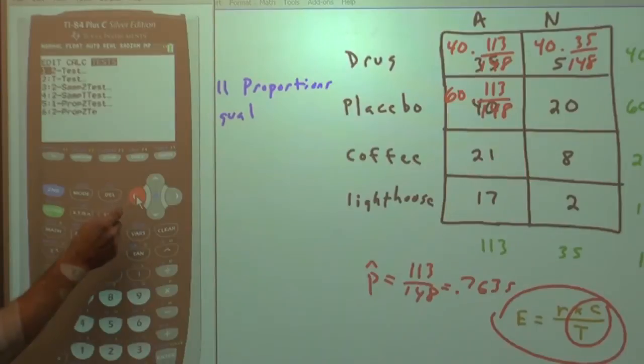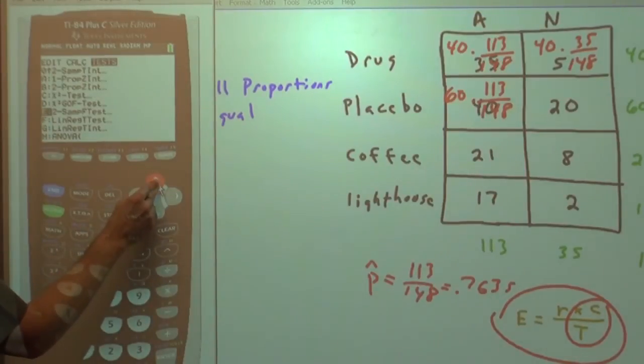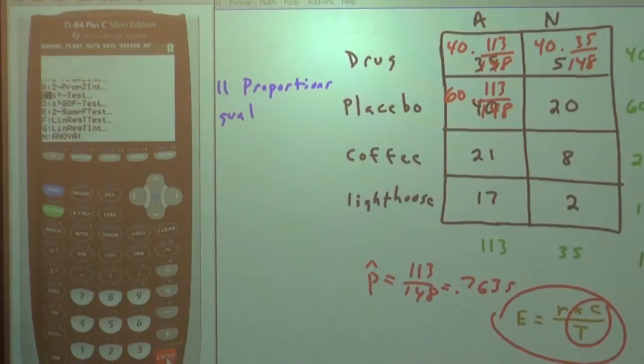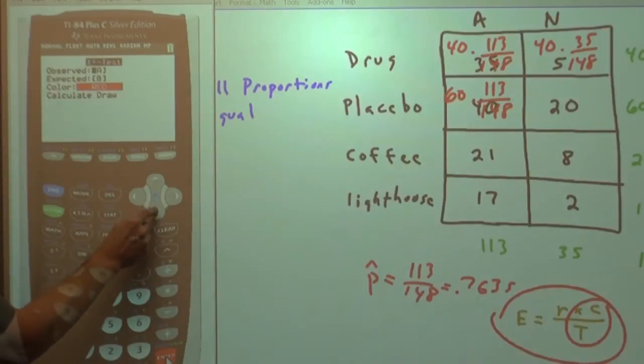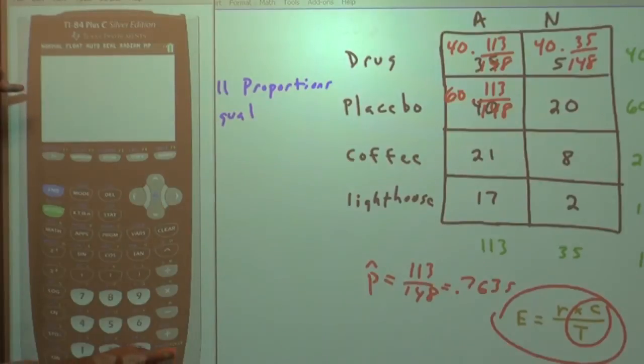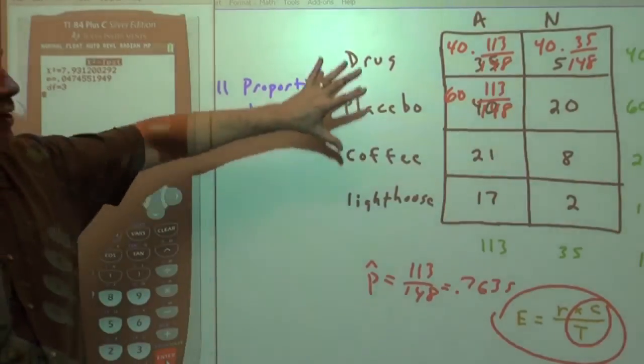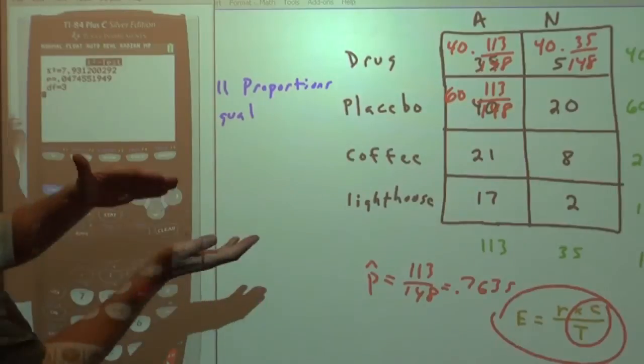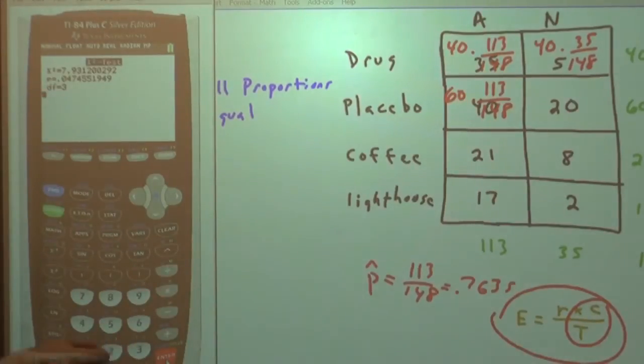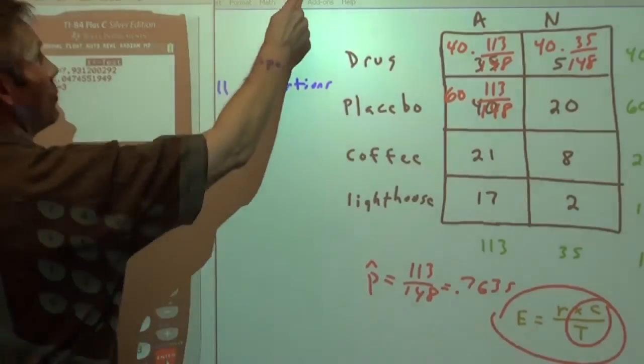We go back to stat, we go over to test. Again, we go up to the chi-squared test. Everything's where we want. We have the observed counts in A. We don't even have to reconfigure matrix B. We go to calculate, and there it is. It gives us our chi-squared statistic and our p-value. We're below 0.05, so with the probability of a type 1 error of less than 5%, the evidence suggests that not all of these proportions are equal. And if we wanted to find out which ones are officially different, then we can match them up two at a time.